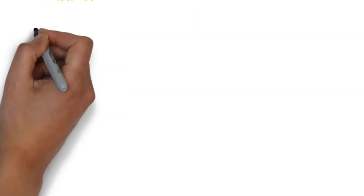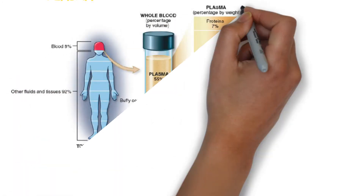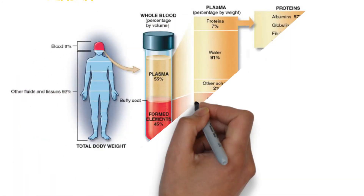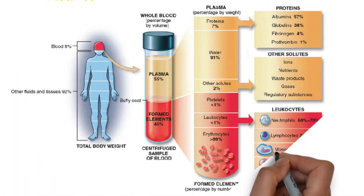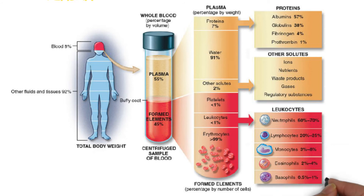Eight percent of body weight is formed by blood. If you look at a centrifuge sample of blood, you can see plasma makes 55 percent of blood and formed elements make 45 percent of blood. You can also see the buffy coat between plasma and formed elements.